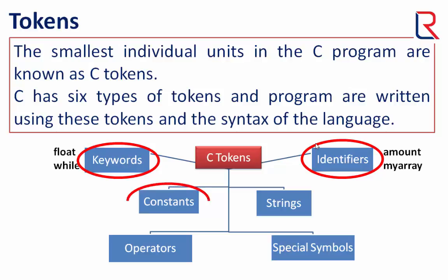Now let's see constants. Constants are fixed quantities that do not change during the execution of the program. C supports several types of constants like integer, real, character, and strings. For example: 15, -15.5, and 200.